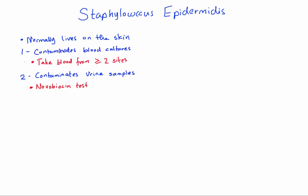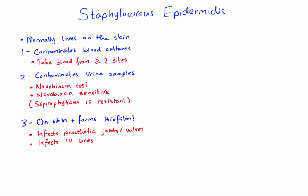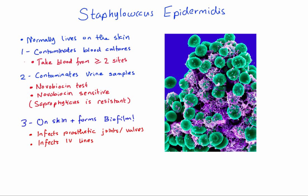If it's sensitive to novobiocin, it's Staph epidermidis — likely contamination. If it's resistant, it's Staph saprophyticus — likely the cause of your UTI. The third implication of Staph epidermidis being normal skin flora: it forms a biofilm. So its favorite infections involve anything that goes through the skin — like IV lines, prosthetic heart valves, or prosthetic joints. In a real scanning electron microscope image (colored), you can see all the biofilm material between the cells helping it stick to IV lines and prosthetics.